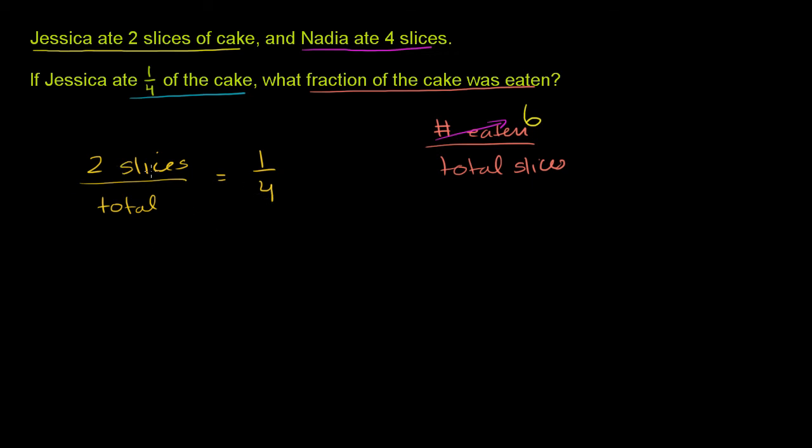Four times two slices is going to be equal to eight slices. Eight slices, I'm multiplying the four times the two, cross multiplying, is going to be equal to the total times one, is going to be equal to the total.